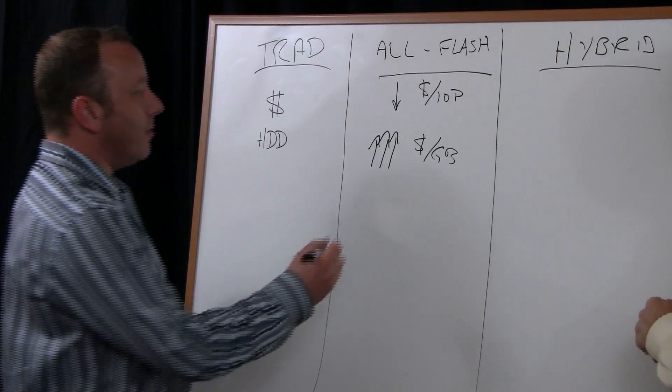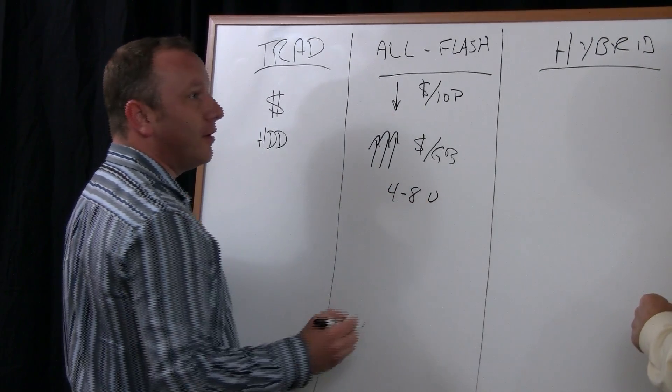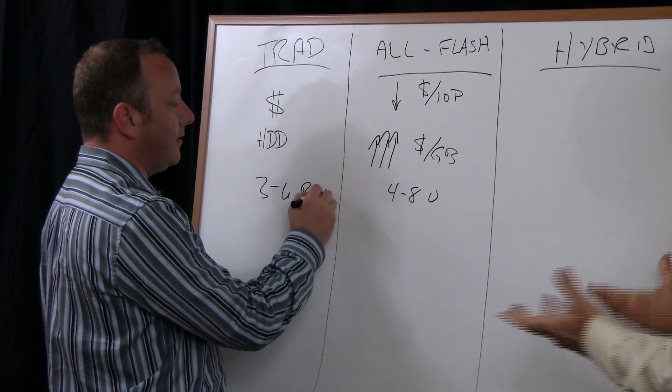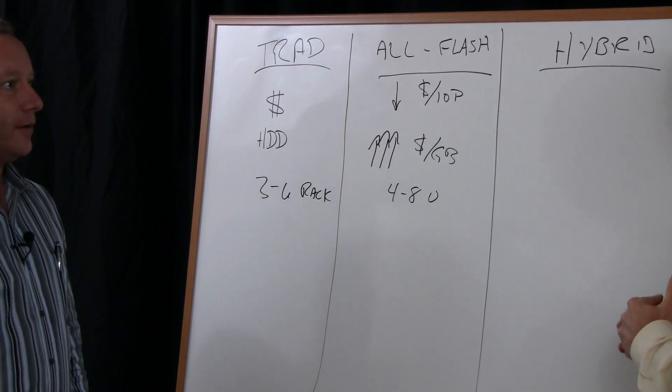Because you can do in about maybe four to eight U, which it takes three to six full racks of gear over here. And then what we have just started shipping a little while back is what we call our HA-2800.